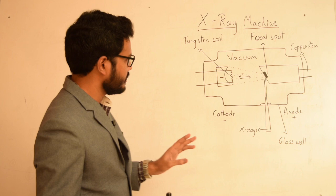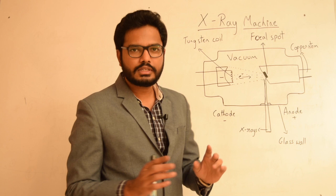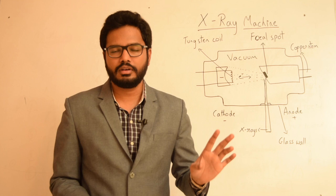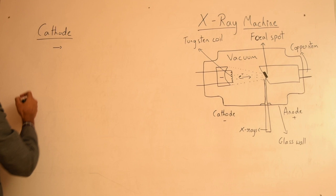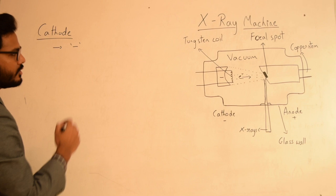Apart from this, the entire glass case is enclosed by oil, which acts as an insulating medium. Now let's discuss each component of the x-ray machine in detail, starting with the cathode. The cathode is basically negatively charged, and in an x-ray machine it is made up of a tungsten filament.